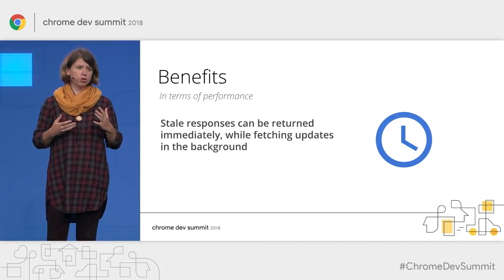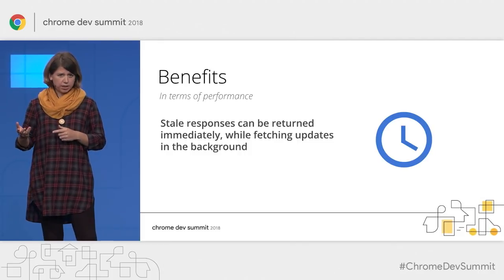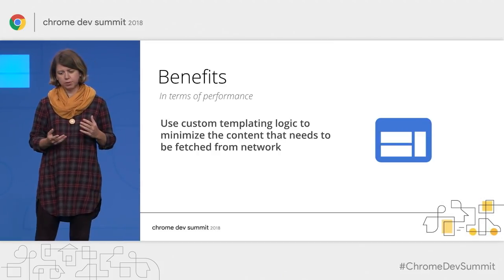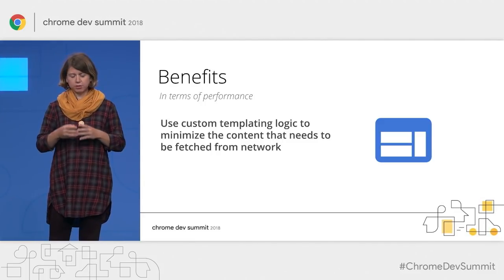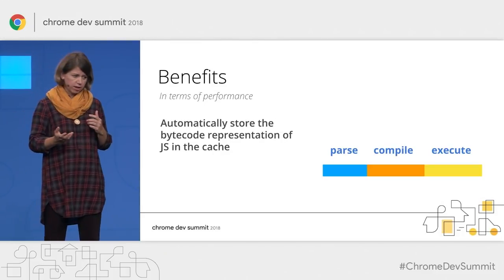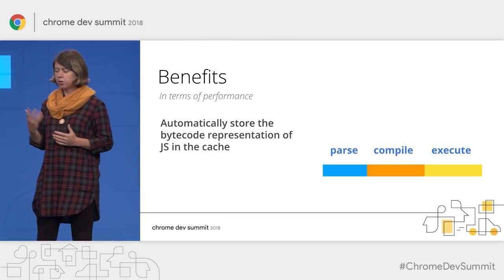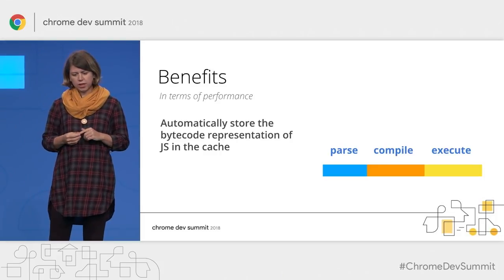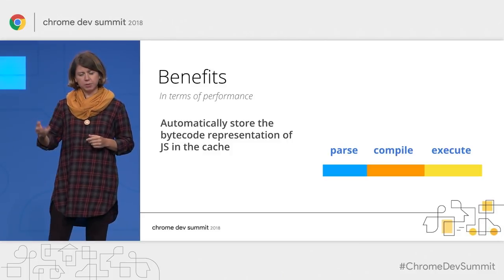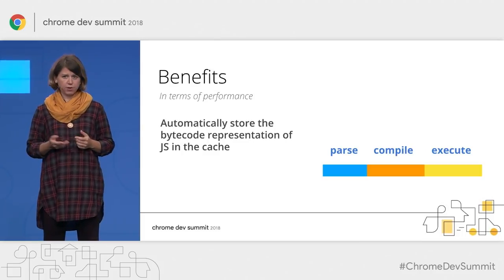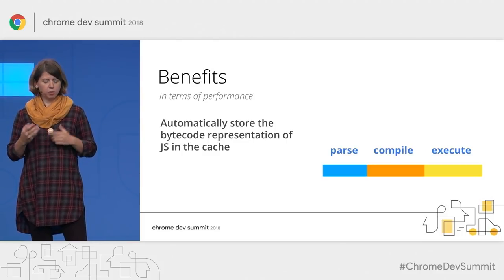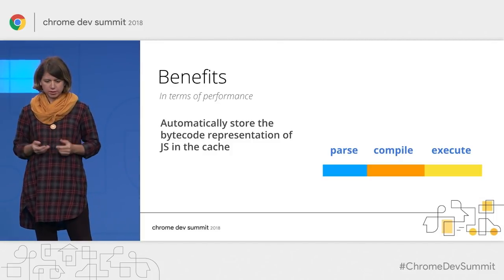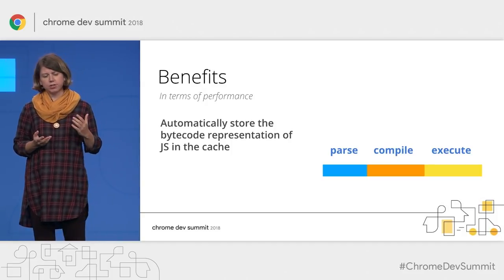Using service worker brings a lot of benefits in terms of performance. In many cases it allows you to overcome network latency entirely — for example, if you cache your entire app, you don't need to go to the network anymore. Also, if you have some cached content, you can show it immediately even if it's a bit stale, and look for updates in the background at the same time. It can also make your average requests smaller — for example, in the app shell model where you're fetching just a partial part of your page rather than the full HTML each time. Finally, engines like V8 use heuristics to store bytecode from parse/compile phases to avoid that cost on repeated visits, and service worker can opt into that optimization automatically, making repeated visits faster.